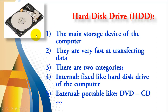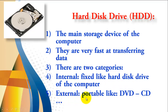The hard disk is very fast at transferring data, which is why it's the best device to store data. There are two categories for storing data inside a computer: internal and external. Internal storing means it is fixed — it stays on the hard disk inside your computer. The second category is external, which means it is portable — you can move the disk from one device to another, like with DVDs and CDs.